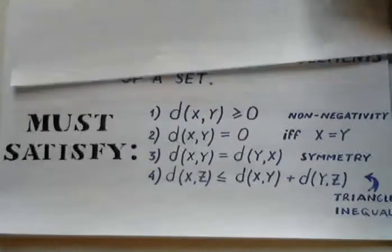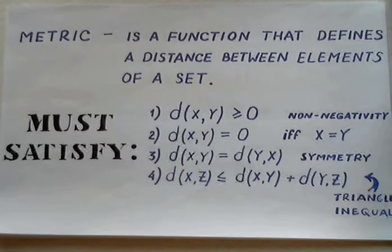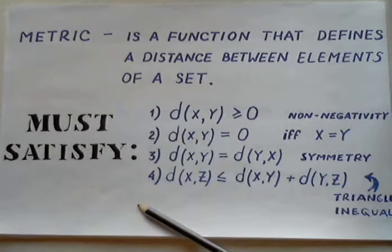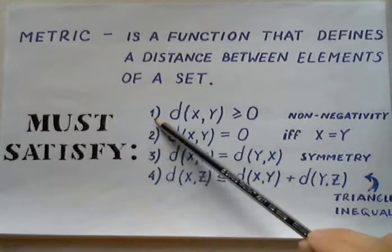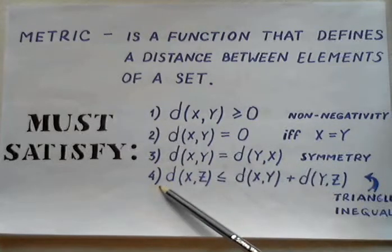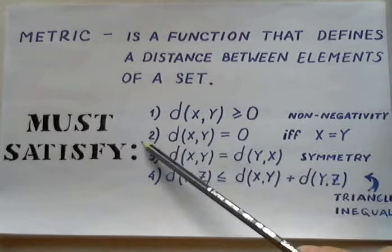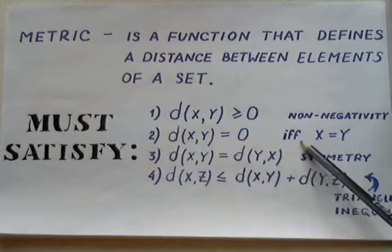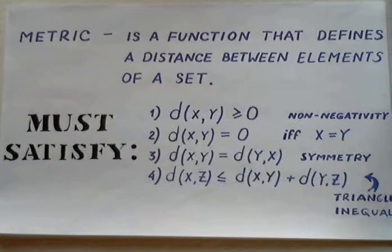Recall that metric is a function that defines a distance between elements of a set. It must satisfy four conditions: non-negativity, symmetry, triangle inequality, and it should be equal to zero if and only if its arguments are equal.